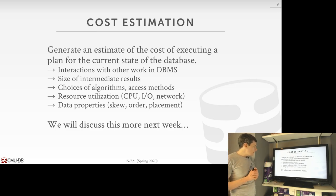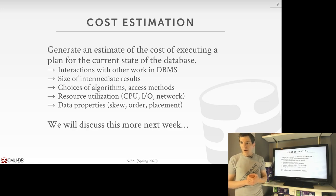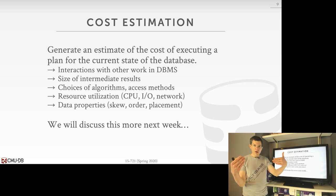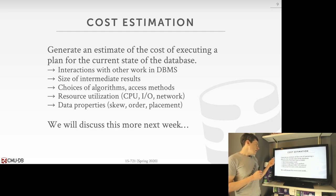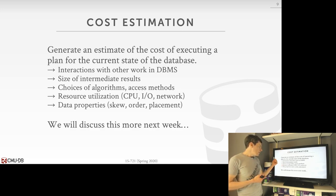On cost estimation: we have a query, a logical plan, and we want to figure out the best physical plan. We use a cost estimator to predict the execution cost of executing that physical plan, then use that to determine which physical plan is preferable. There are many things we could use to figure out cost — how the query interacts with other concurrent queries, intermediate result sizes, asymptotic analysis of the algorithms used for physical operators, CPU or memory usage, and physical data properties like location and compression.